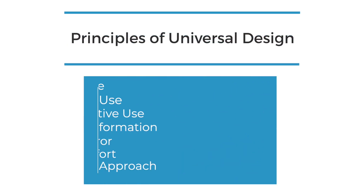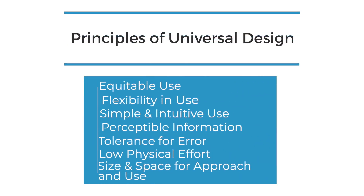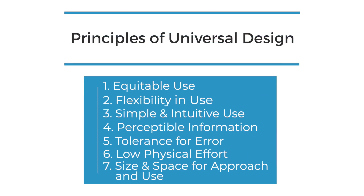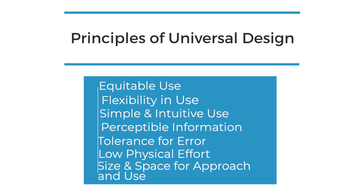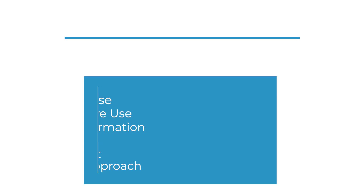The seven principles of universal design are equitable use, flexibility in use, simple and intuitive use, perceptible information, tolerance for error, low physical effort, and size and space for approach and use.